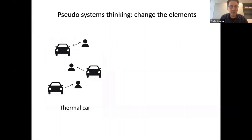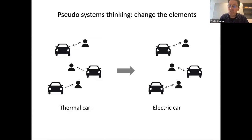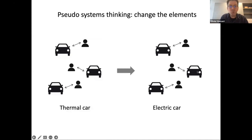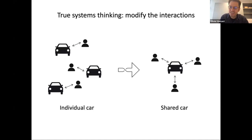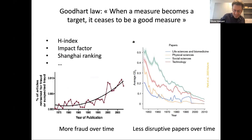Let me give an illustration. This is pseudo-systemic thinking — replacing the combustion engine car with an electric car. Is this really a systems change? No, because there will be as many cars, as many drivers, as many highways. You haven't changed the interaction between a person and their car. What would be true systems thinking? You move from individual cars to shared cars. Now you've changed the interactions, and you truly change the structure of the system. This example has many resonances in science and research.